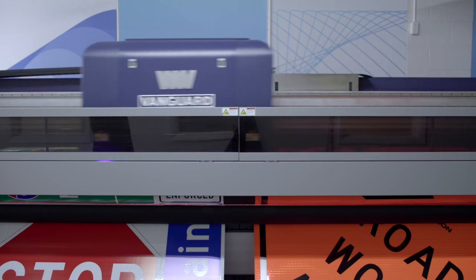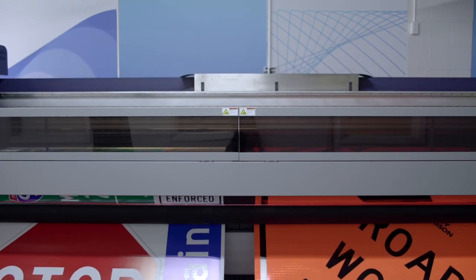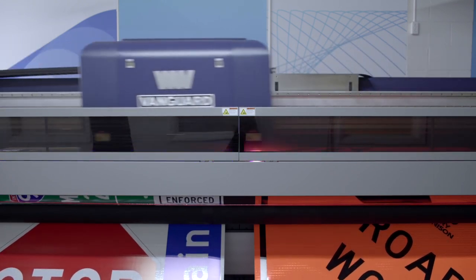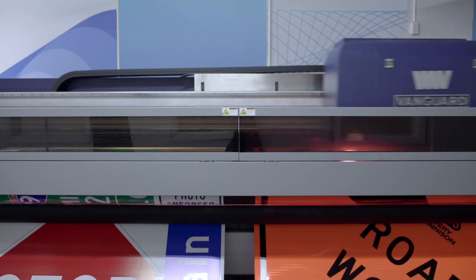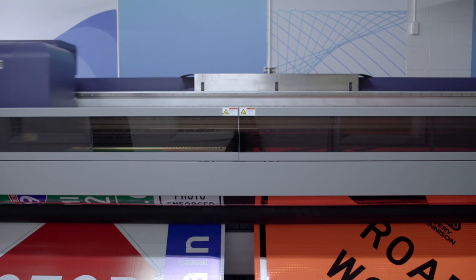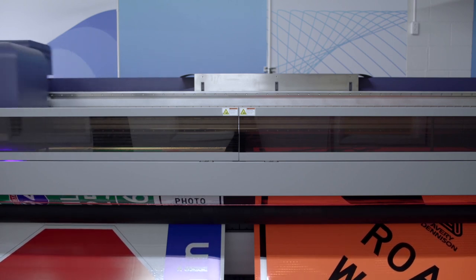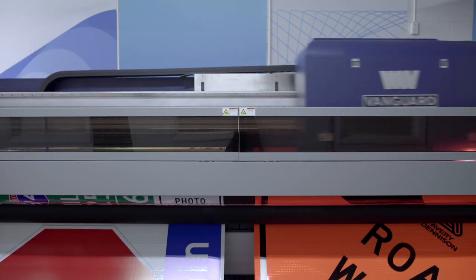The printer uses 6 Kyocera KJ4A printheads. Each head is 200mm in length, with 2 channels, each having 1328 nozzles, with each pair of heads printing 2 colors. Later in the video, we will take a closer look at these heads.